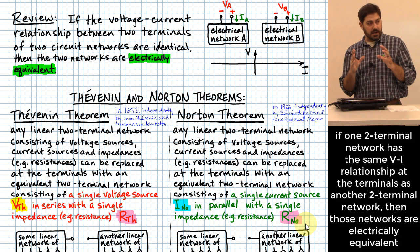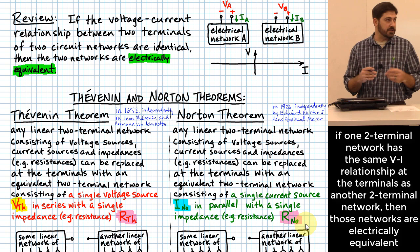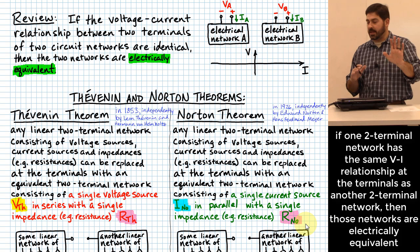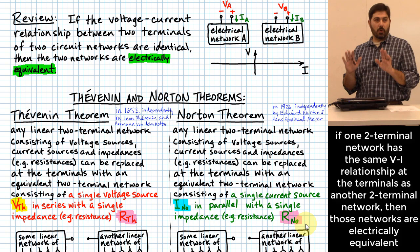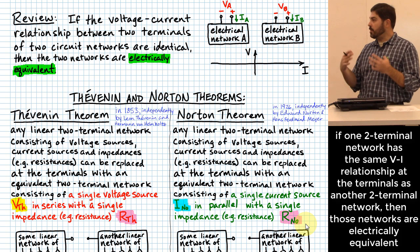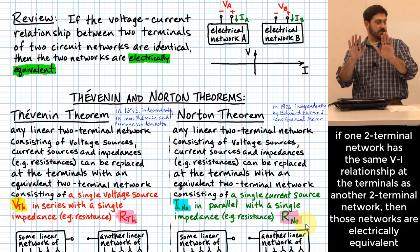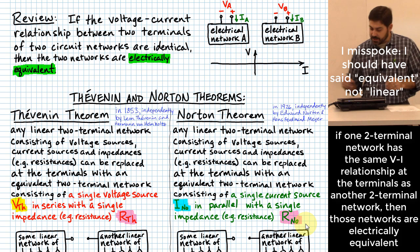The first thing to address is what it means to be an electrical equivalent. Two networks that each have two terminals are said to be electrically equivalent if they have the same voltage and current relationship — in other words, the same VI curve. If the two circuits behave exactly the same with respect to how voltage is related to current, then the two circuits are electrically equivalent.